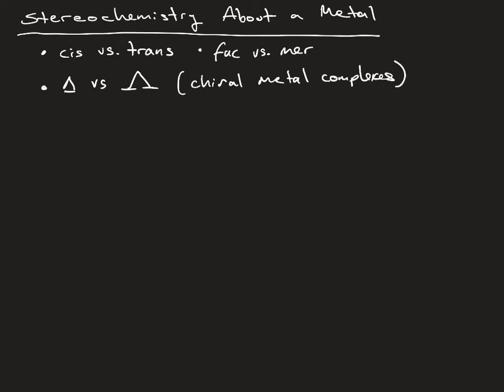To understand the difference between a delta and a lambda isomer, we're going to look at cis cobalt en2 Cl2 plus. Depending on how the ethylene backbone in the en ligand wraps around the metal center, this can adopt a delta or a lambda orientation.